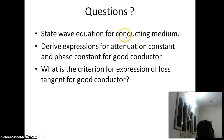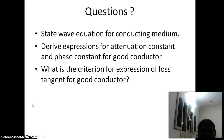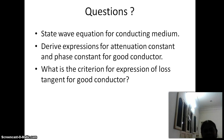Questions for this class: First, state the wave equations for the conducting medium - the wave equation for dielectric medium differs from that for conducting medium by an additional term involving sigma. Second, derive expressions for attenuation constant and phase constant for a good conductor - arriving at alpha equals root of pi f mu sigma. Third, what is the criterion for the loss tangent for a good conductor? For a good conductor, sigma is much greater than omega epsilon; for a dielectric, sigma is much less than omega epsilon.